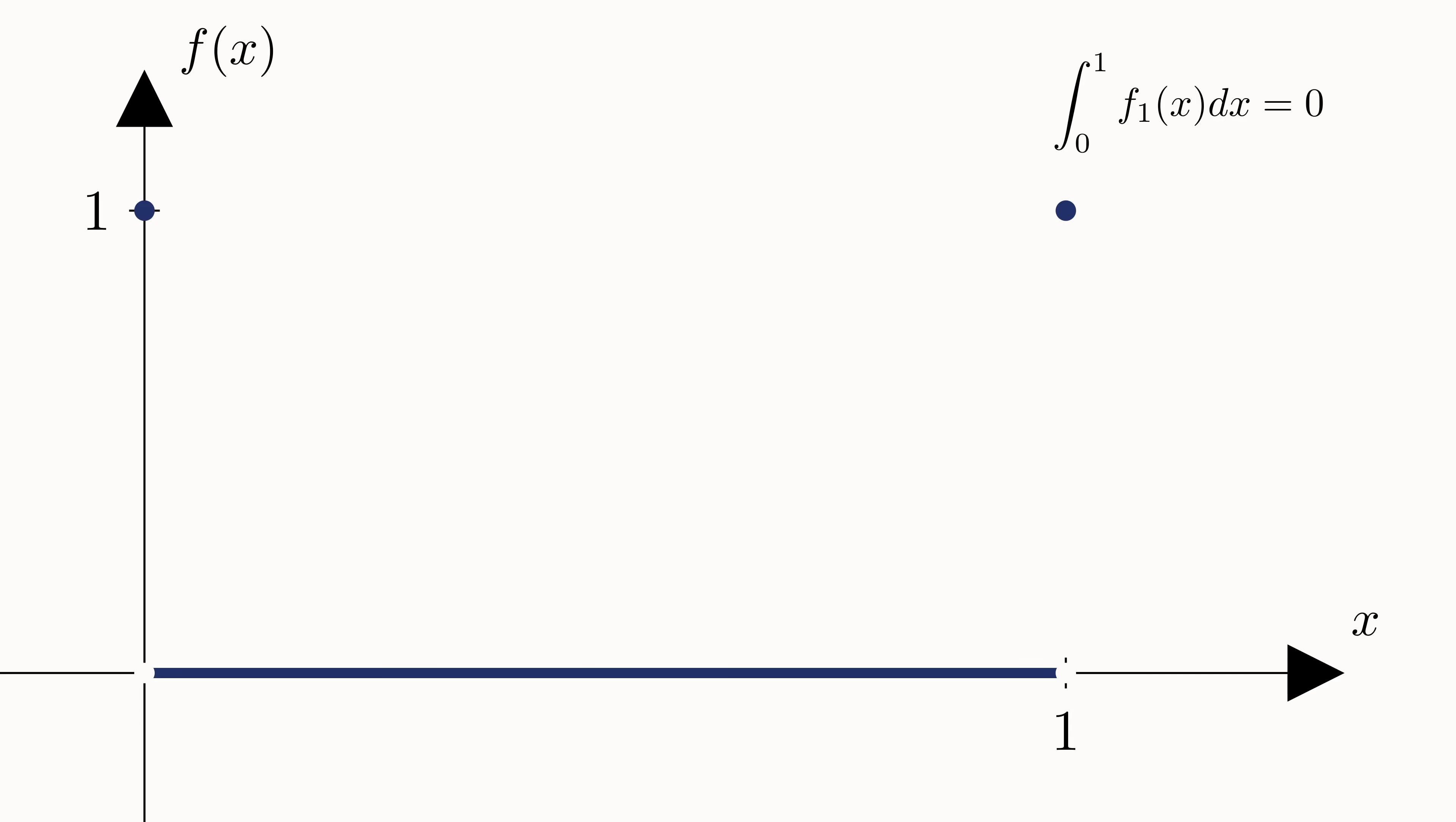Similarly, we can construct f2 by having it equal one at an additional point, one half. For the exact same reason as f1, f2 is also Riemann integrable. We can continue building similar functions, f3, f4, and so on. Each and every single one of these functions will be Riemann integrable.